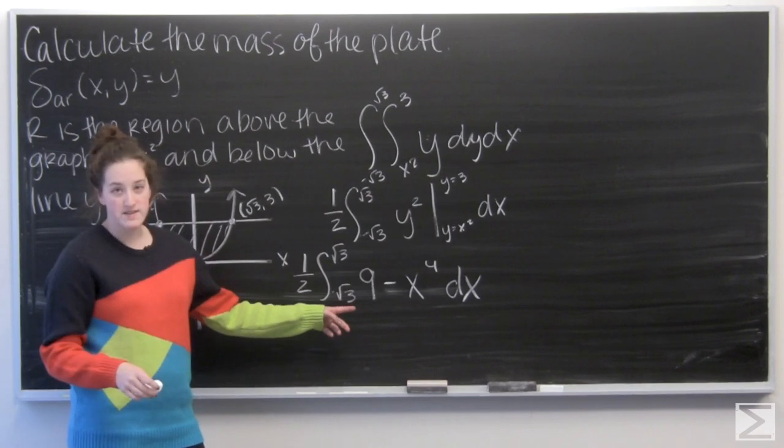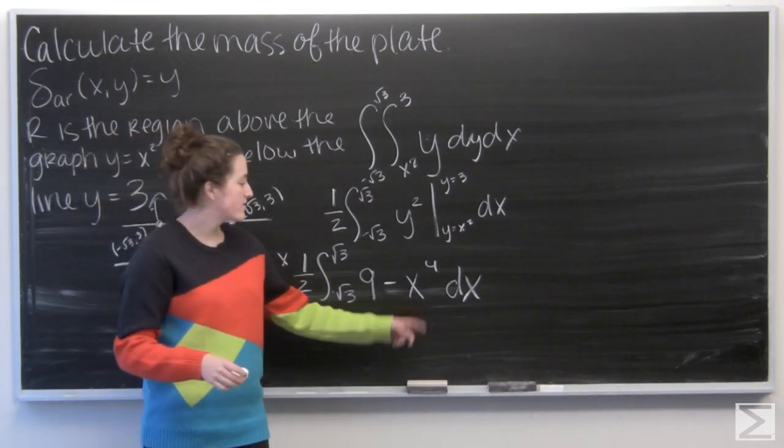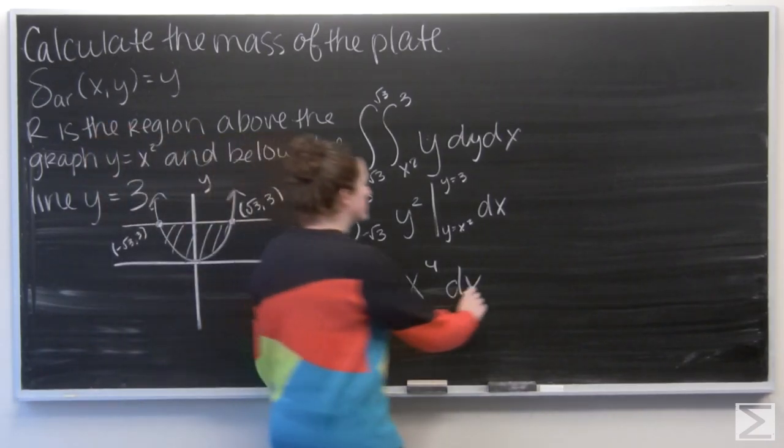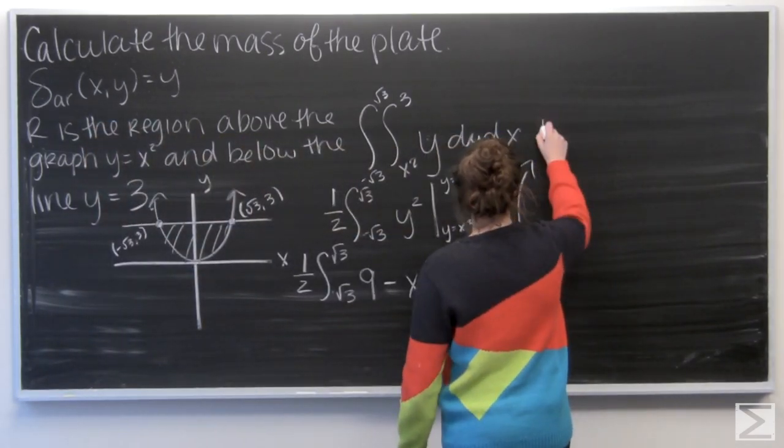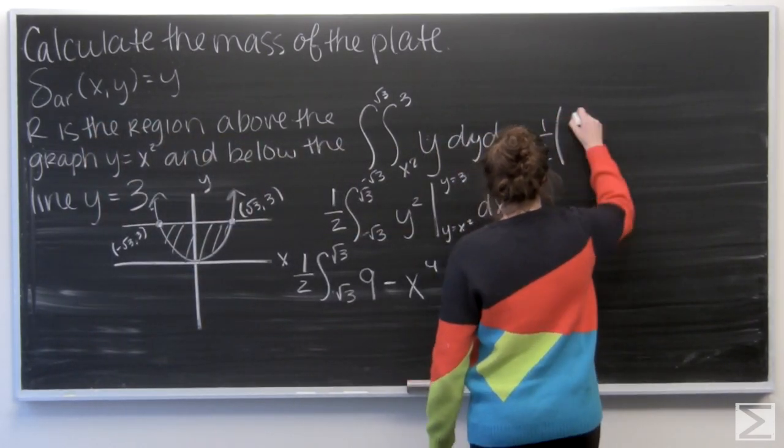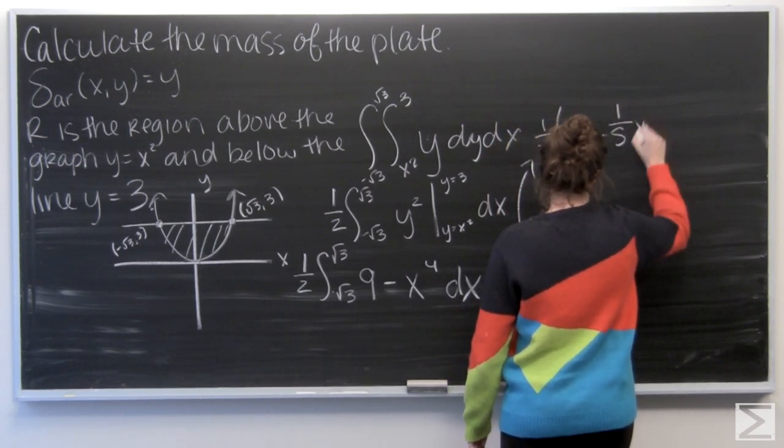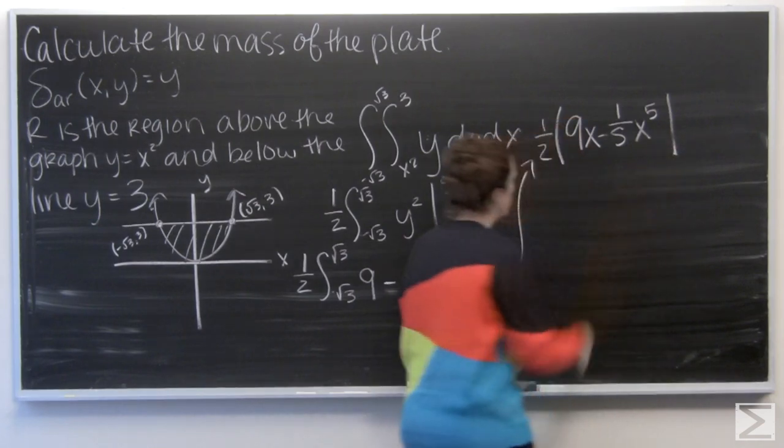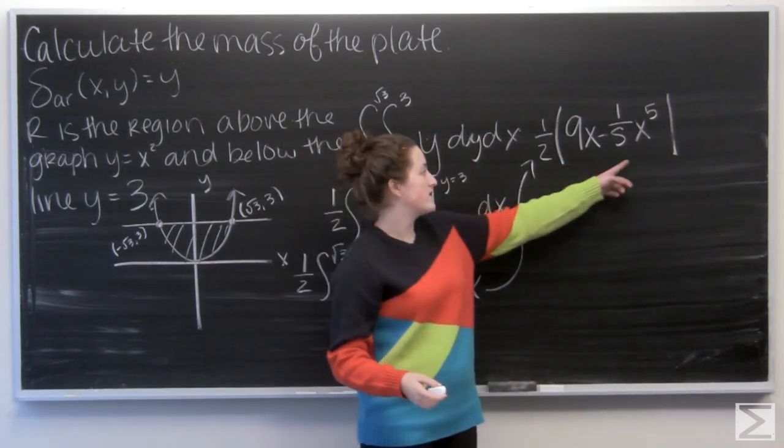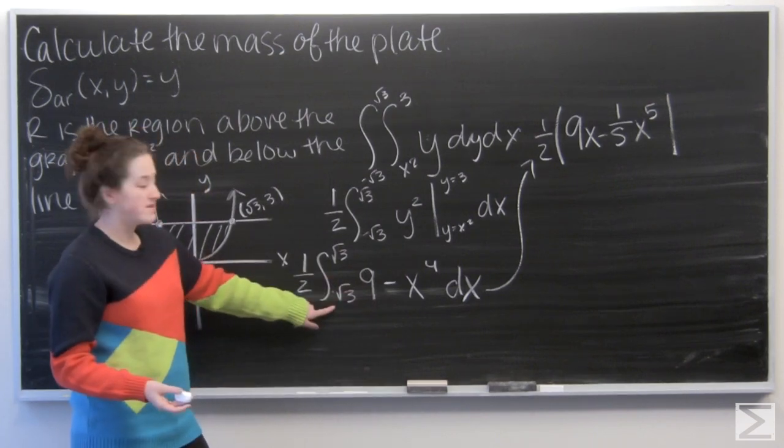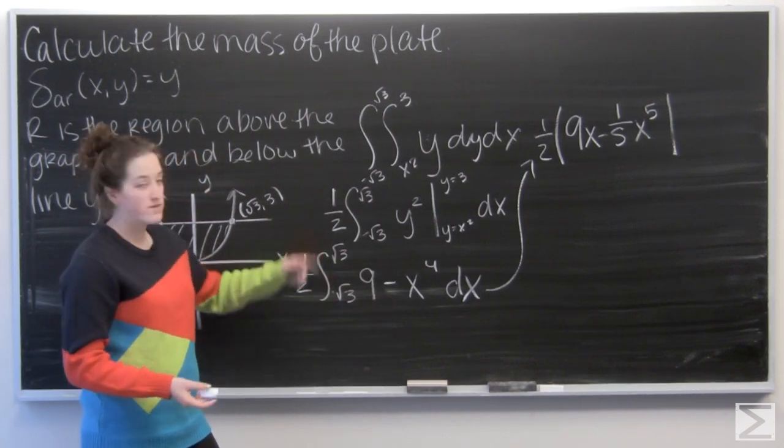So now I just have to integrate 9 minus x to the fourth with respect to x. So the integral of 9 is going to be 9x. And the integral of x to the fourth is going to be 1 fifth x to the fifth. And then I want to evaluate that from x equals negative square root of 3 to the square root of 3.